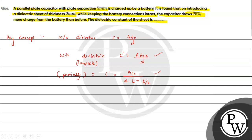We write q' = 1.25·q, where q' is the final charge and q is the initial charge drawn from the battery. Since the battery voltage V is constant, we write C'·V = 1.25·C·V, and the V cancels, giving us C' = 1.25·C.